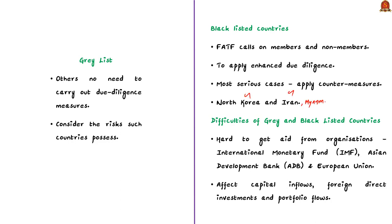Now let us see what are the consequences of being put in the blacklist. Firstly, no financial aid will be given to them by the IMF, World Bank, ADB, or EU. Secondly, they also face a number of international economic and financial restrictions and sanctions. This is the basic about FATF.